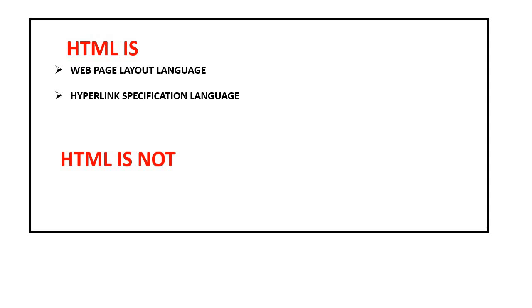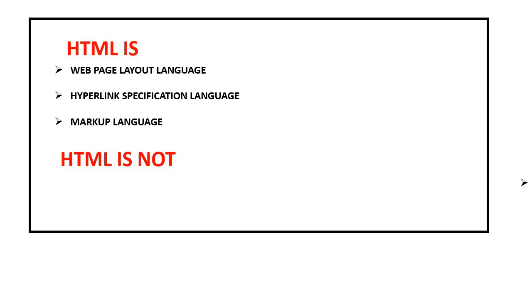When you open any web page and links are given, if you move the mouse pointer over there you will see that it changes to a hand sign, and when you click there you will be forwarded to another web page — that is known as hyperlink specification. And lastly, it is a markup language, not a programming language.